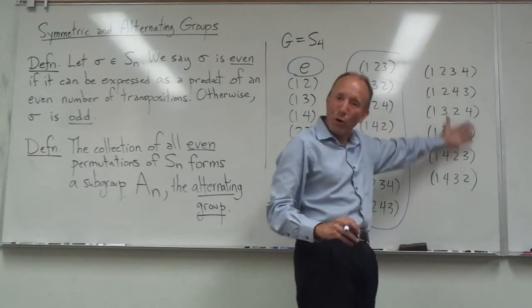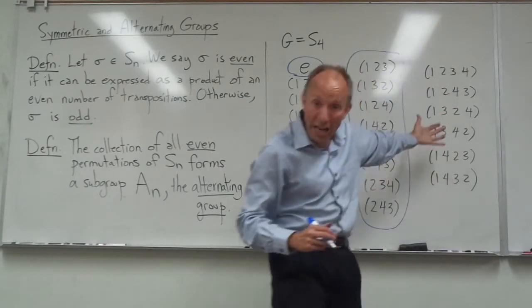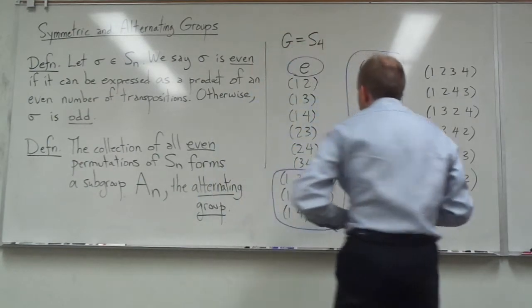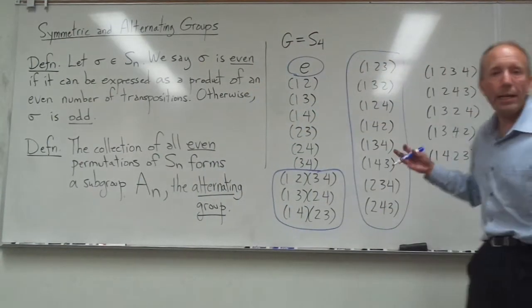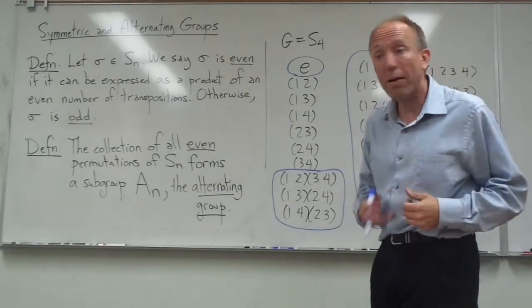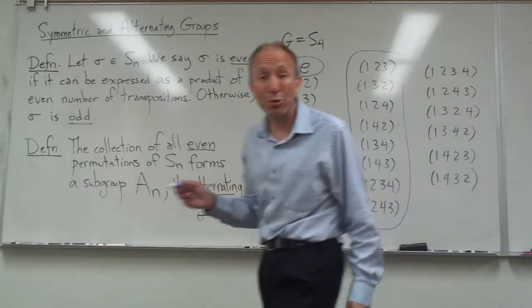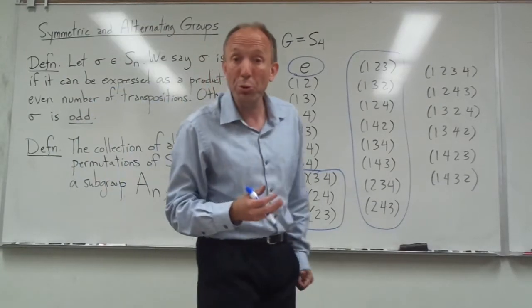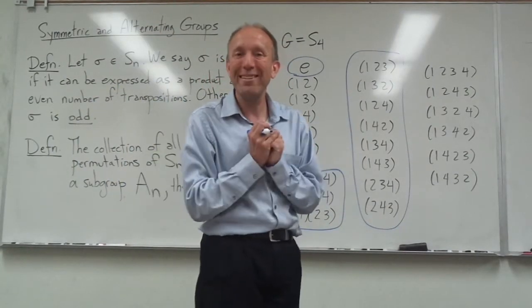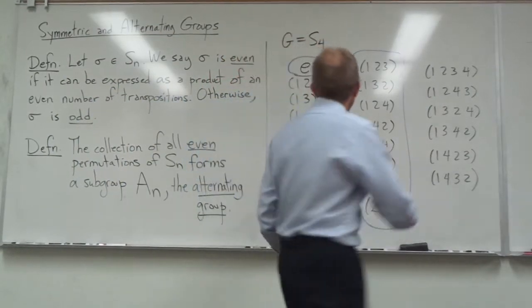So it's very interesting. Even without doing any brute force calculations, I know that if I multiply any of the things that are circled in blue, I'm going to get something else that's in blue. I have a subgroup here.